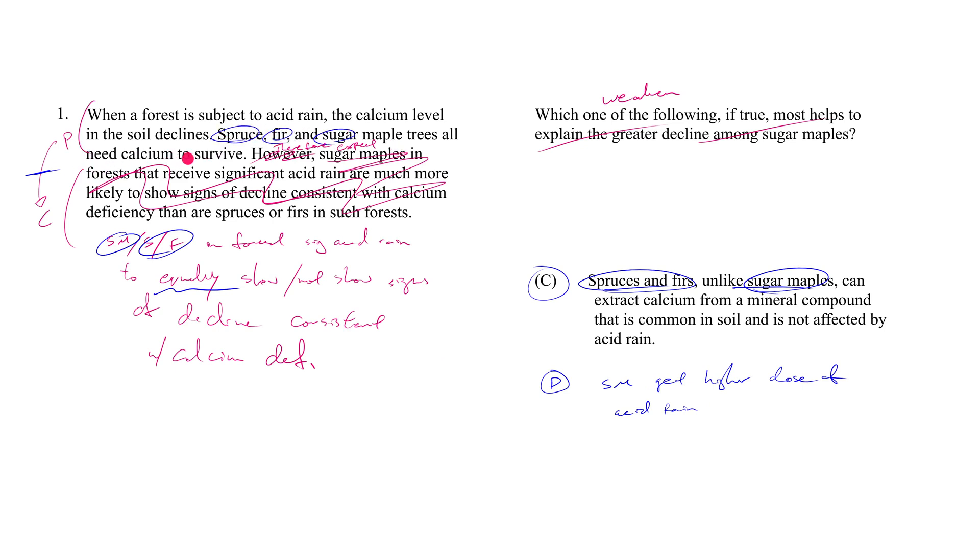So maybe somehow sugar maples get a higher dose of acid rain. If this were true, you see, now despite the fact that all three of these trees need calcium to survive, I no longer have reason to believe that they're all going to be equally affected. In fact, now I have reason to believe that they're not going to be equally affected—that sugar maples will be differentially and more severely affected.